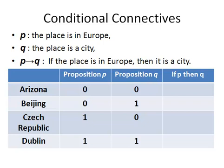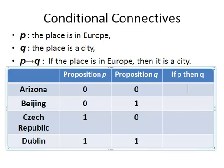So what I have here are some examples, which give a better idea of what the conditional connective and its truth table are about. We are looking to see what kind of example makes the compound statement false. First off, we have Arizona. Arizona is not in Europe and it is not a city. So it does not contradict our compound statement, so the compound statement is still true for this example — we put a one in there.